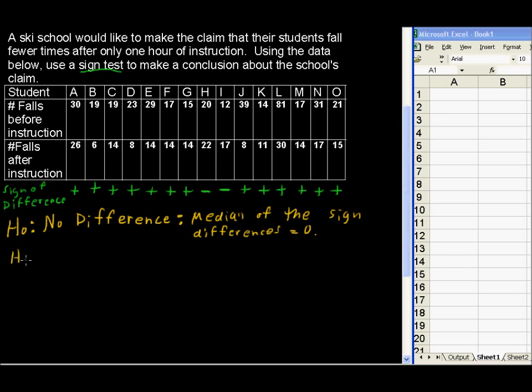On the other hand, the alternative hypothesis says we're trying to say not just different, but did they actually get better, did the students get better? So I'm going to say more falls before, just so we can stay with this positive, the way we subtracted before minus after.